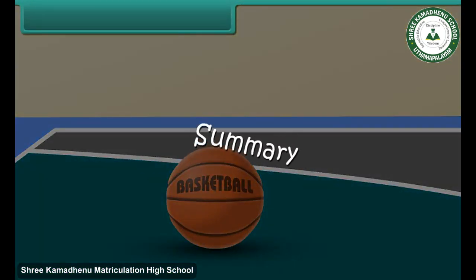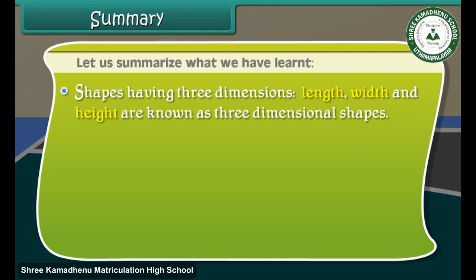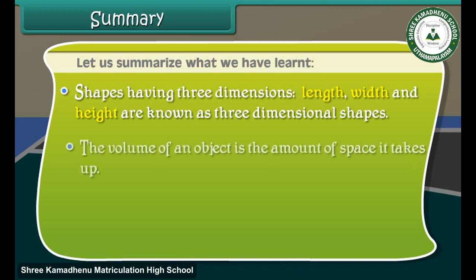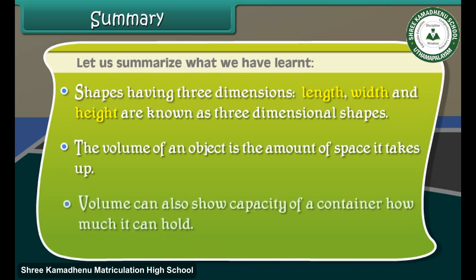Summary. Let us summarize what we have learned. Shapes having three dimensions, length, width and height are known as three-dimensional shapes. The volume of an object is the amount of space it takes up. Volume can also show capacity of a container, how much it can hold.